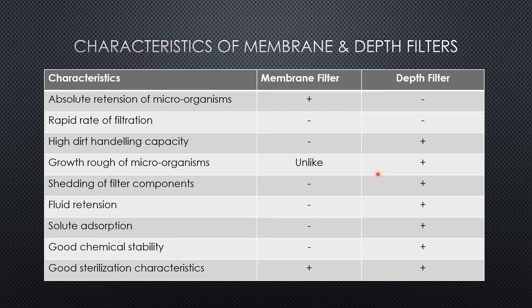Out of nine characteristics, almost seven are applicable to depth filters, so depth filters are more capable than membrane filters. Membrane filters provide absolute retention of microorganisms in the upper layers, while depth filters achieve retention slightly deeper in the matrix. Depth filters also show shedding of filter components, fluid retention, solute adsorption, good chemical stability, and good sterilization characteristics. When sterile air is required, depth filters are preferred over membrane filters.